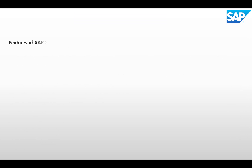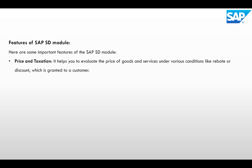Now we'll understand the major features of SAP SD module. First is Price and Taxation — it helps to evaluate the price of goods and services under various conditions like rebates or discounts granted to a customer. Basically whenever we are doing a sale, it helps us to maintain the pricing of a product and what taxes need to be maintained for that particular sale.